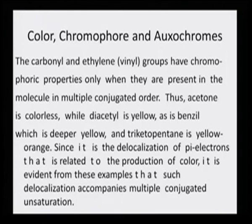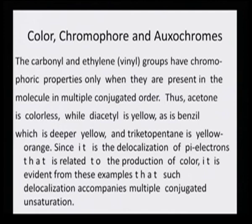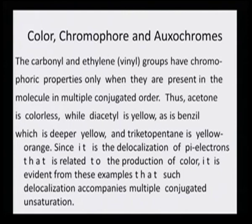We also saw that the complementary color is generated from the transmitted light because the absorbed light is taken up by the material. Now, for a recap of color, chromophore and oxochromes: the carbonyl and the ethylene or vinyl groups have chromophoric properties only when they are present in the molecule in multiple conjugated order. It is the delocalization of the pi electrons that is related to the production of color, as evidenced by the fact that such delocalization accompanies multiple conjugated unsaturation.